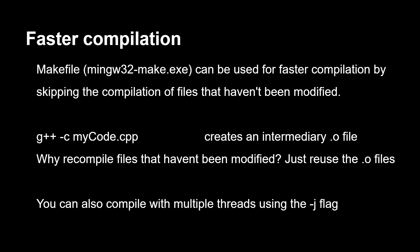For faster compilation, I recommend giving Makefile a try. You already have MinGW installed, so you don't need to set anything up. Makefile works by making .o intermediary files, which you get by using the -c flag to specify the code file. There's no point in recompiling things like the MinHook library, so just compile them once to .o files and then the linker will use them — that means less compilation every time. You can also do multi-threaded compilation with the -j flag, which can really get the compilation time down.